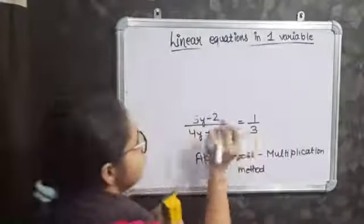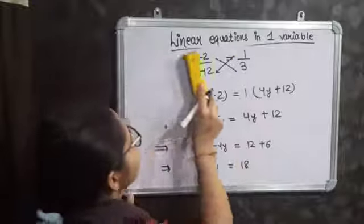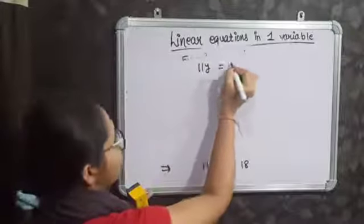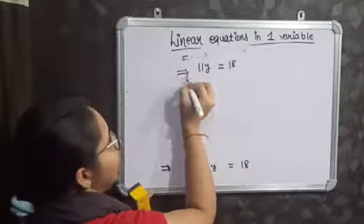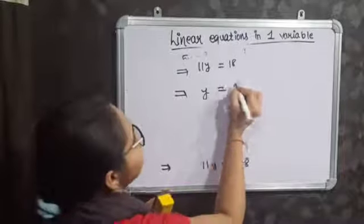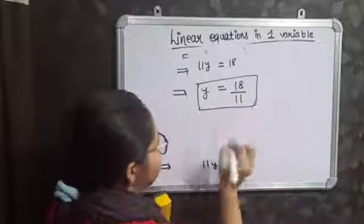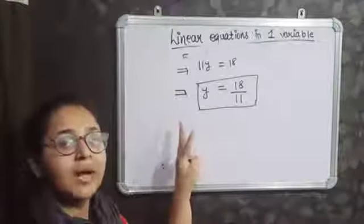Now 15y minus 4y equals 12, and this 6 will become positive. So it implies 15 minus 4 is 11y, equals 12 plus 6 which is 18. So finally 11y equals 18, which implies y is equal to 18 by 11. This is the solution of the given equation by cross multiplication method.